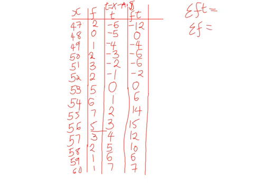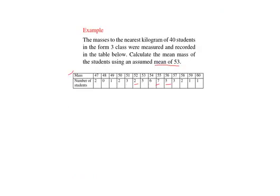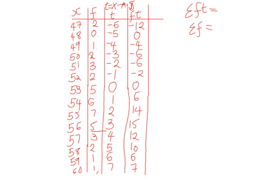So if we add 2 plus 0 plus 1, all the way up to 60, we'll get 40, and this is because we were told the students were 40, so the sigma F is 40.